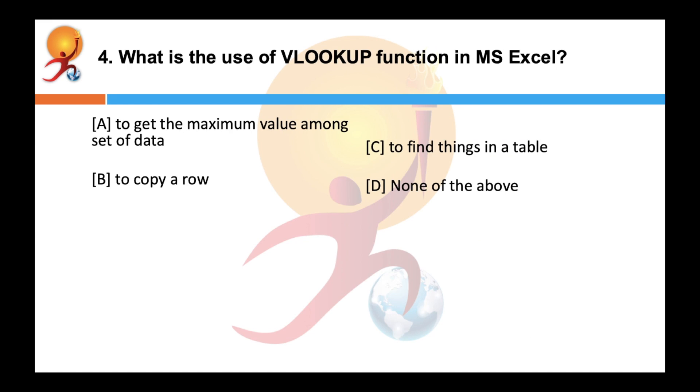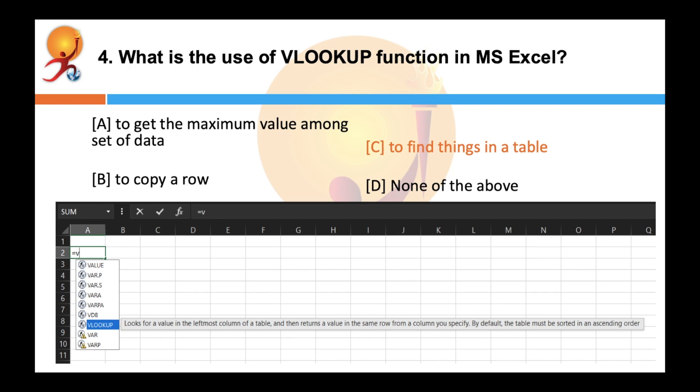What is the use of VLOOKUP functions in MS Excel? Correct answer is C. VLOOKUP is an Excel function that is used to find things in a table or a range by row. VLOOKUP stands for vertical lookup and it supports approximate and exact matching and wildcards for partial matches.